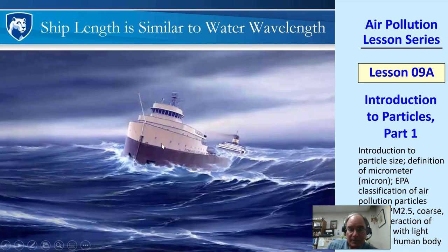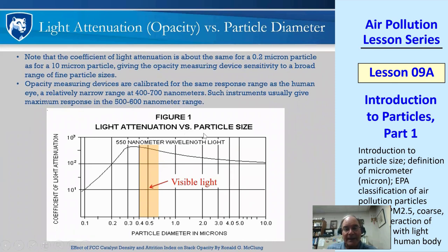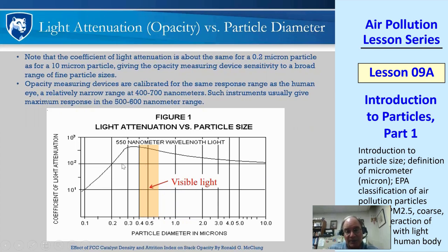This is like the Wreck of the Edmund Fitzgerald on Lake Superior — a true story where the ship and the waves were about the same size, causing the ship to be tossed and capsize. The same happens with light: if you plot light attenuation versus particle size, the peak attenuation is around 0.4 microns, right within the visible light band. That's why we can see combustion particles in smoke — those particles are usually under a micron, right in that range.